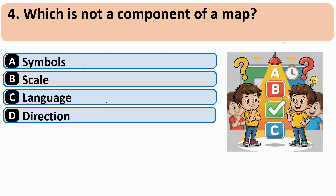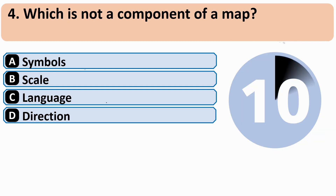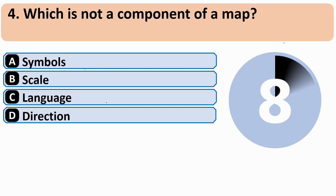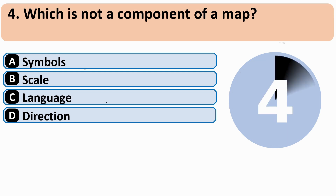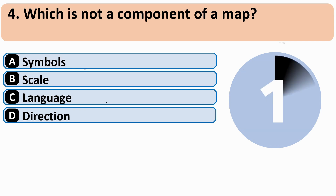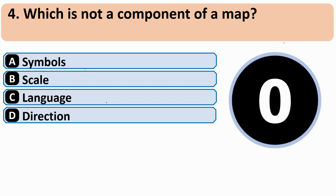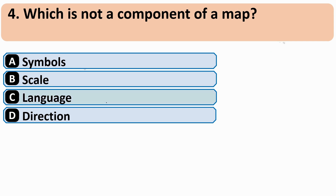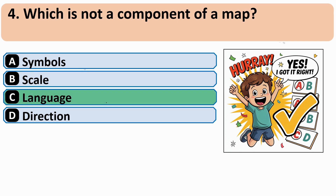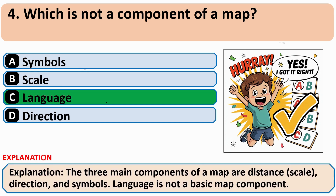Which is not a component of a map? The correct answer is C — language.